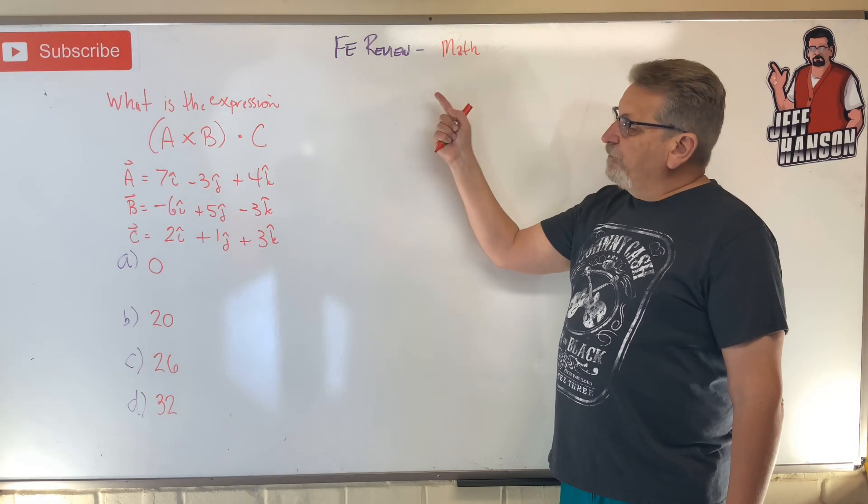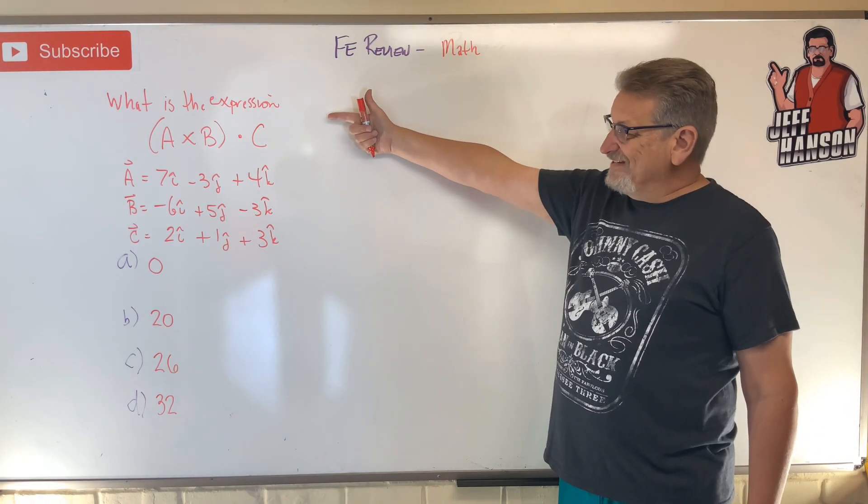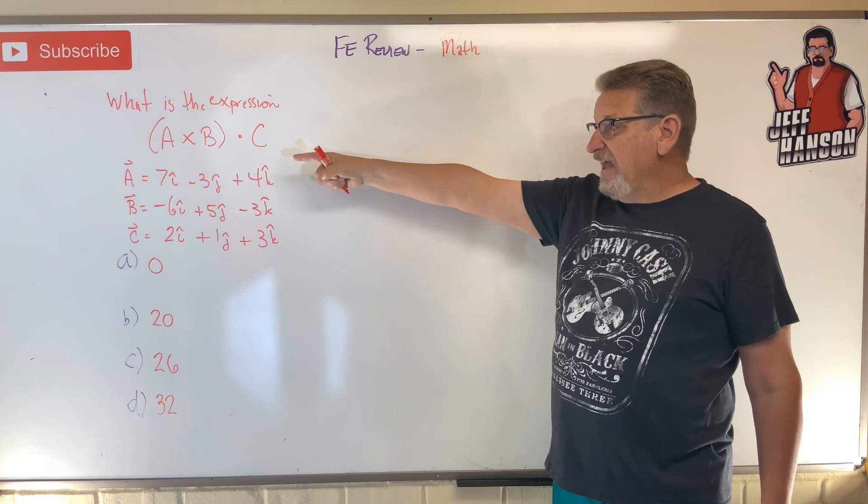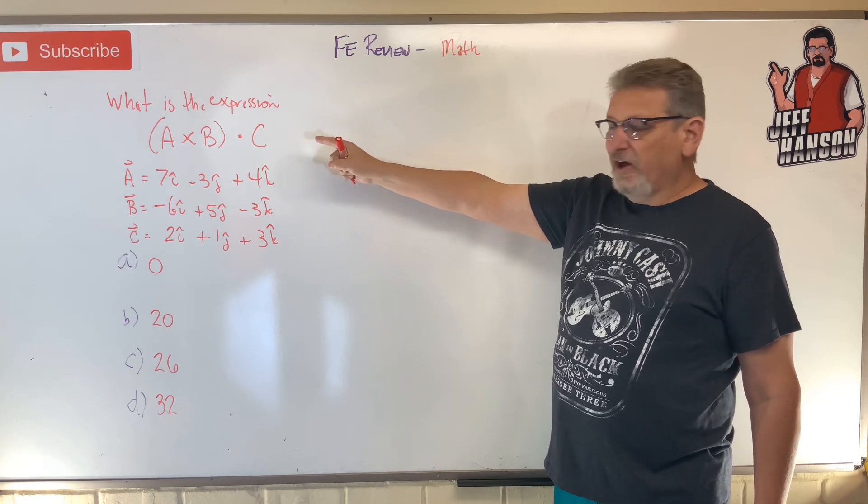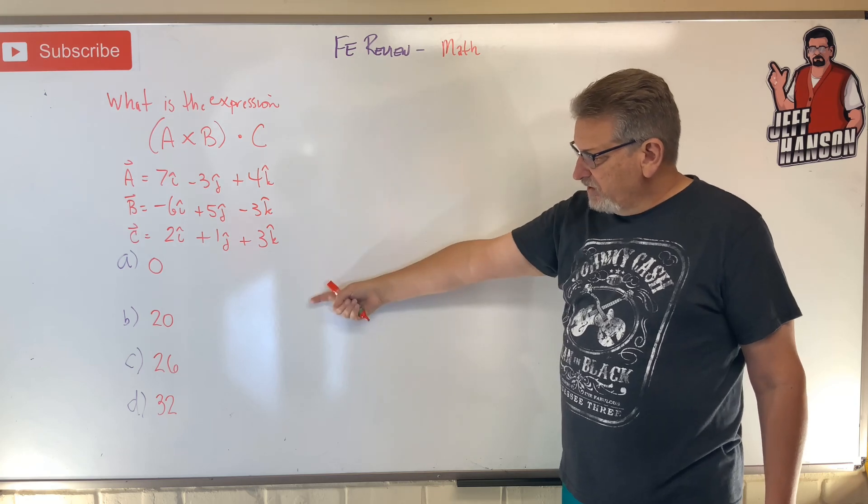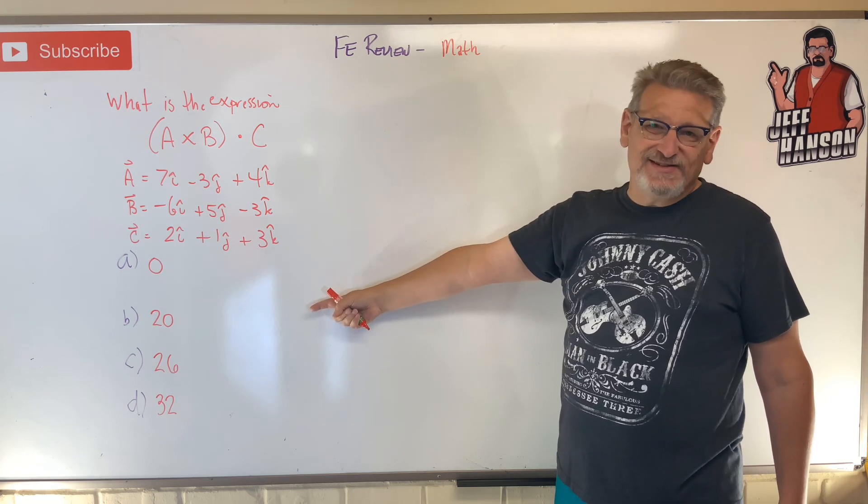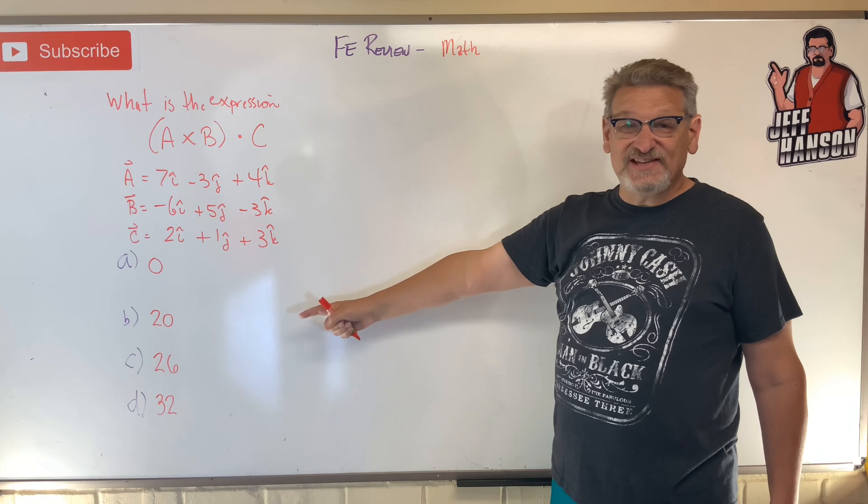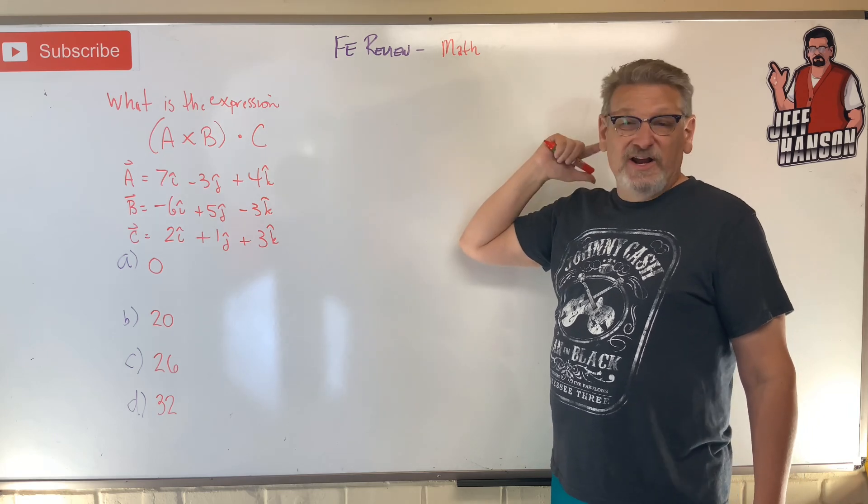Hey gang, welcome back. FE review problem on math. What is the expression A cross B dotted with C? Remember how to do that. There's your three vectors. There's your answer choices. Not vectors, scalar answers. Work it out.